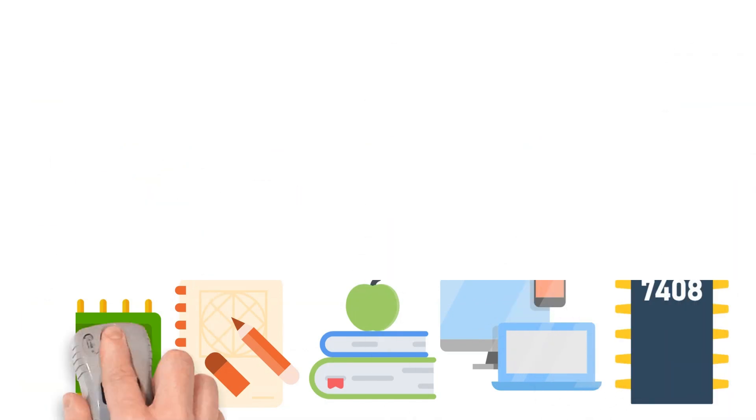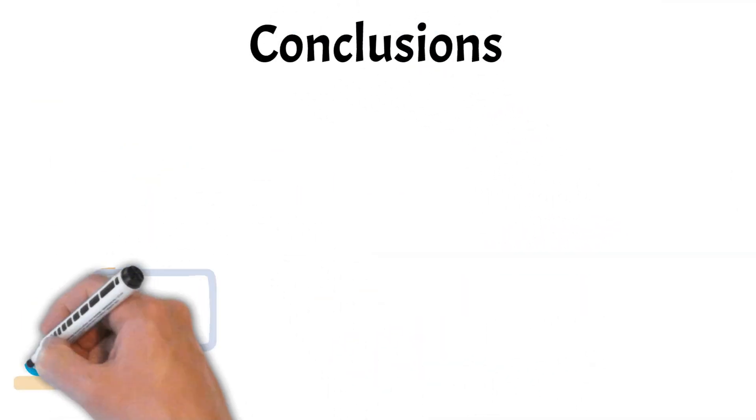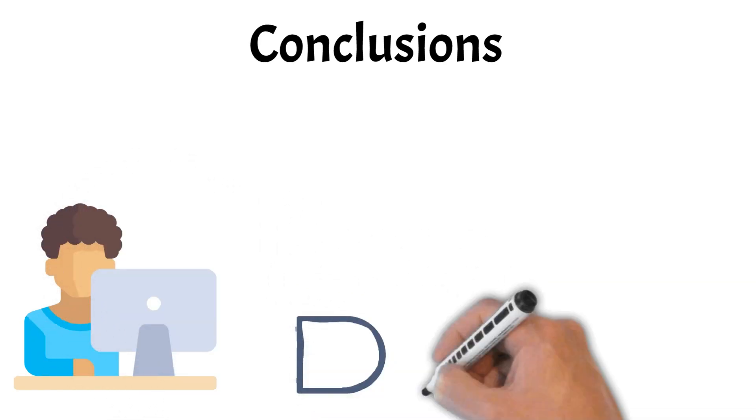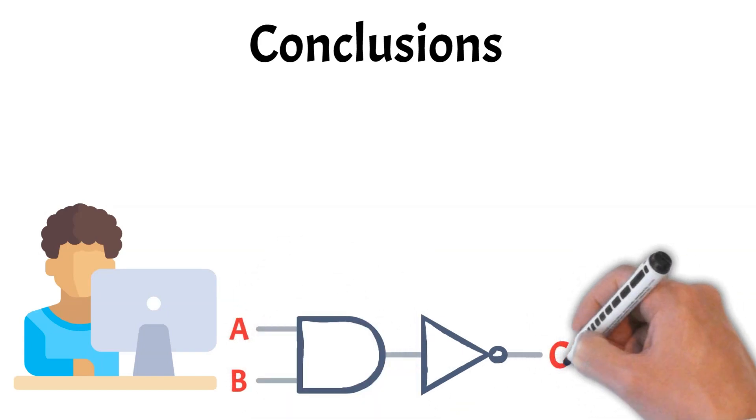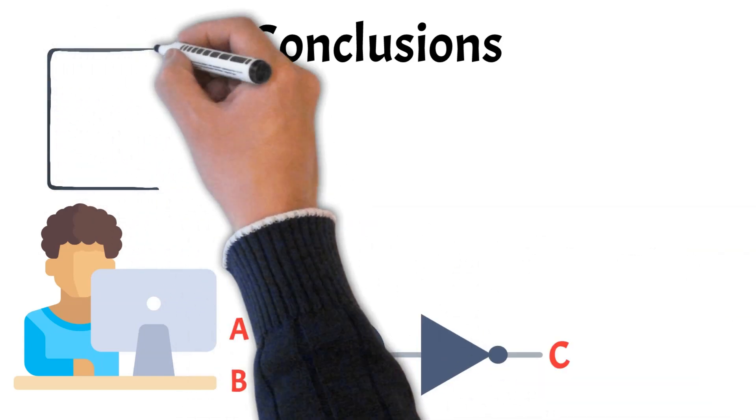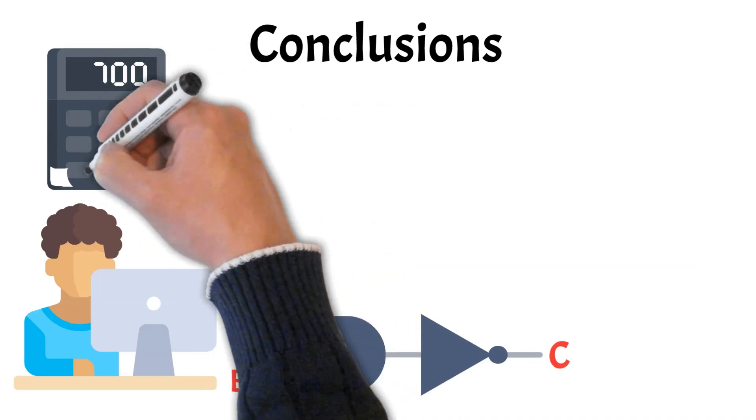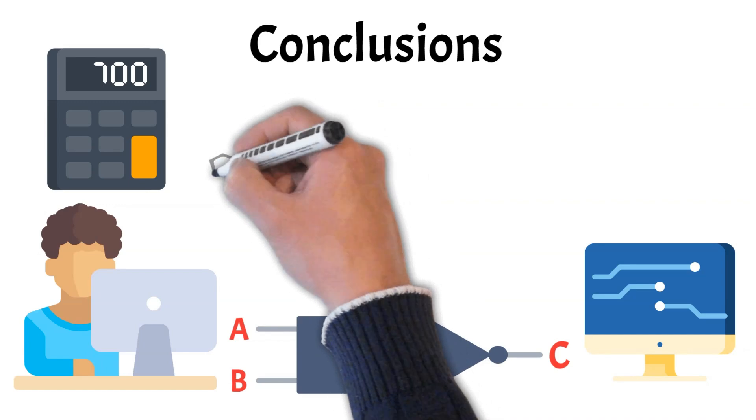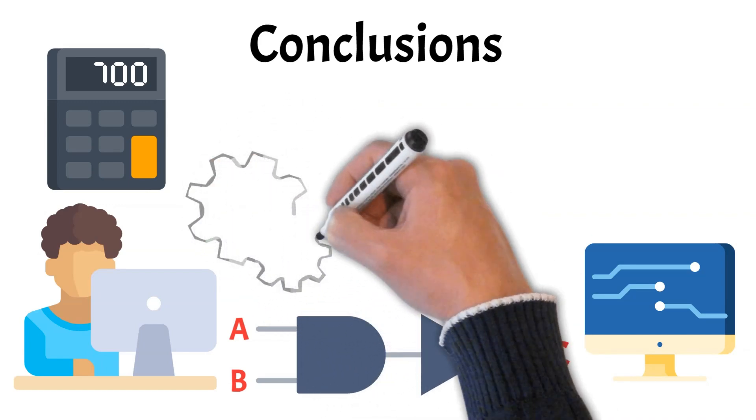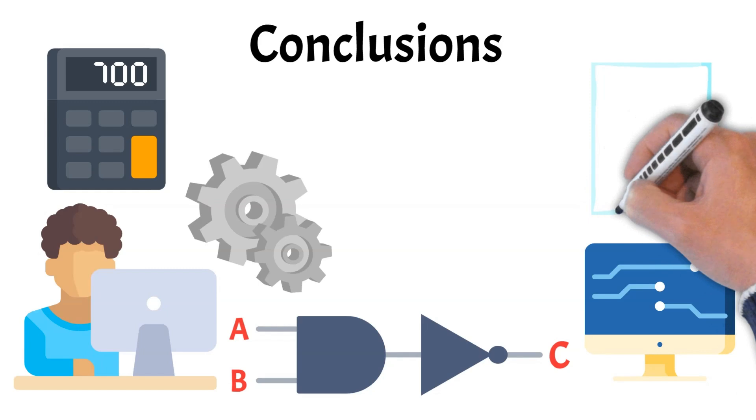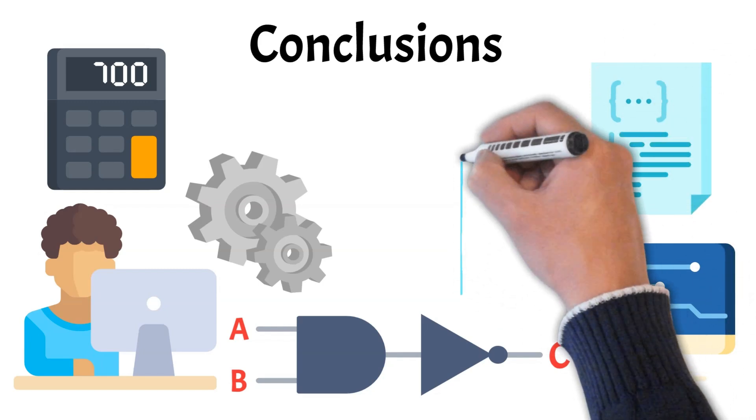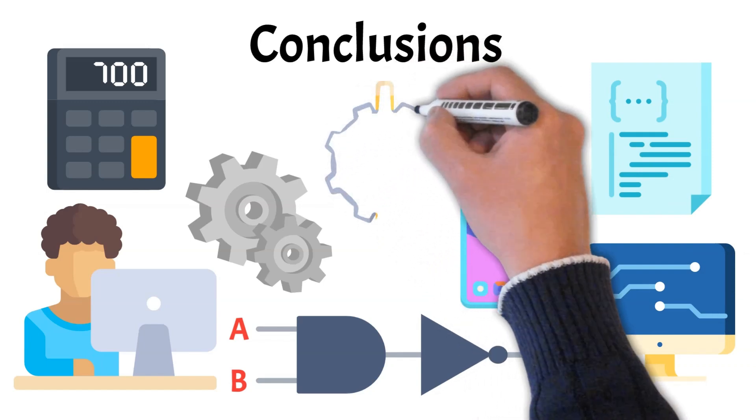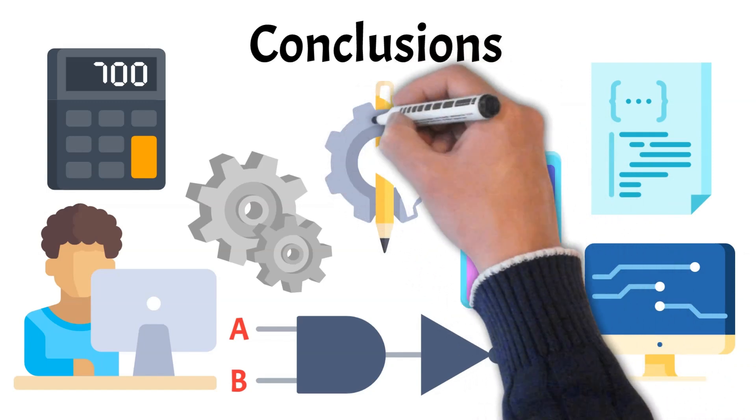In conclusion, logic gates may seem simple at first glance, but they're the foundation of all digital technology. By combining just a few basic types, like AND, OR, and NOT, we can create everything from calculators to advanced computers. Understanding how these gates work helps demystify the inner workings of modern electronics and gives you a clearer view of how information is processed at its most fundamental level. Whether you're curious about how your phone works or diving into digital design, logic gates are the first step in understanding the digital world.